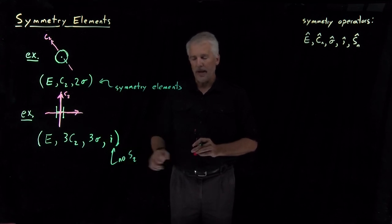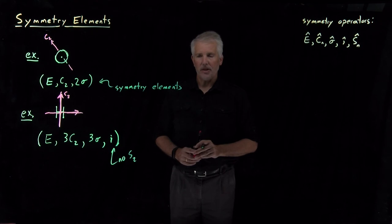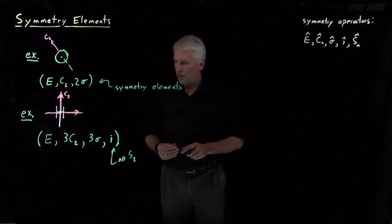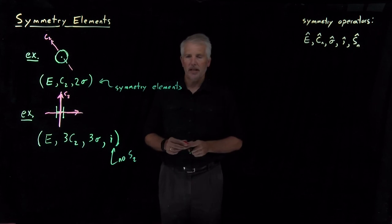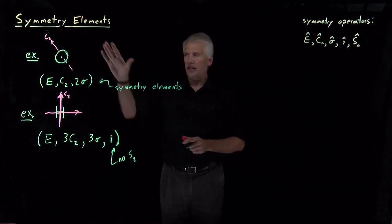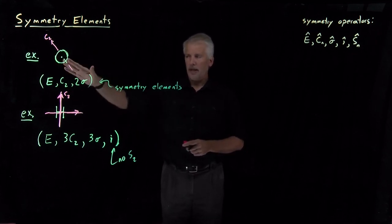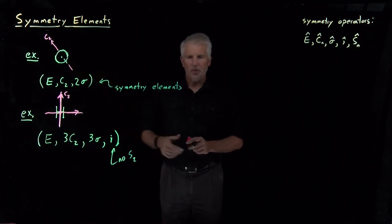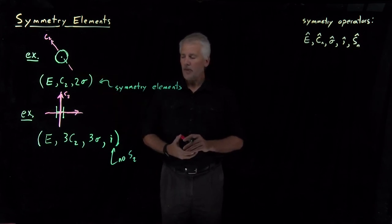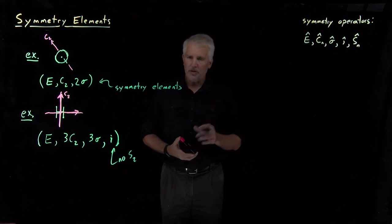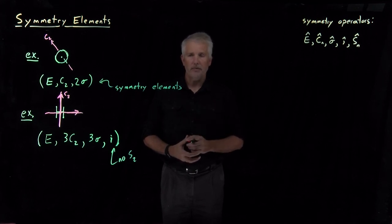We'll see a better example of that when we consider these operations applied to real molecules, and that's what we'll do next. As chemists, we're not really interested in the symmetry elements of letters — the fact that they're embedded in the plane of the board actually makes some features a little more confusing. We're much more interested in the symmetry properties of real molecules, so the next step is to identify symmetry elements for molecules.